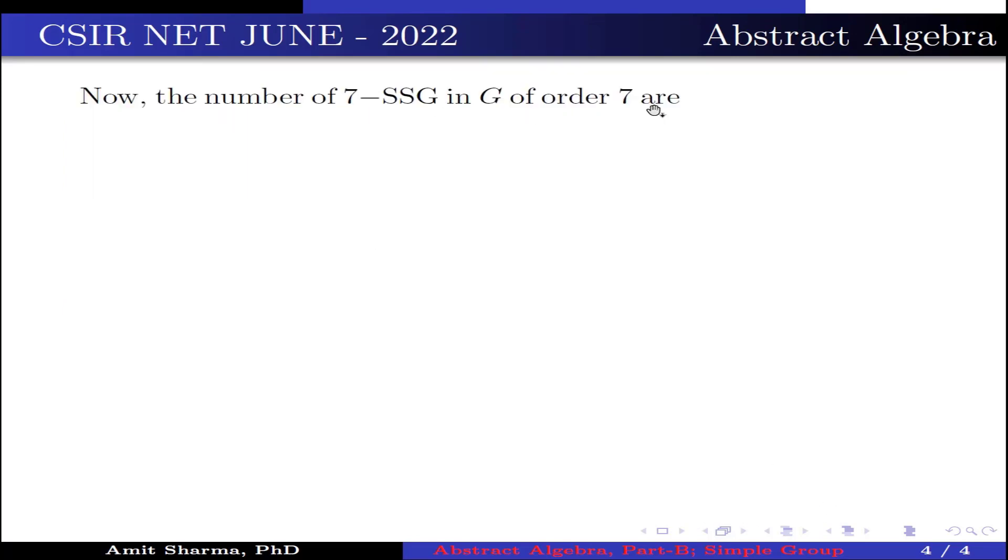Now, the number of 7-SSG in G of order 7 are 1 plus 7k, where k is 0, 1, 2 and so on, such that 1 plus 7k divides order of G, which is 168.